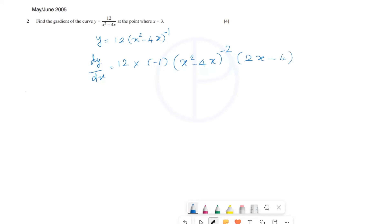This is equal to minus 12 multiplied by 2x minus 4. Now bring the x square minus 4x term to the denominator, so x square minus 4x the whole power 2. If x equal to 3, let's substitute the x value in dy by dx.